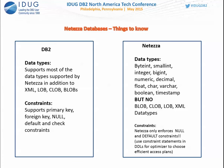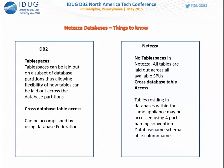In DB2 DPF, table spaces can be laid across a subset of database partitions, giving you flexibility. You can have single-partition tables or tables across subsets or all partitions. In Netezza, you don't have that option — all tables are always distributed across all available SPUs. For cross-database access, DB2 uses federation; in Netezza, as long as databases are on the same appliance, you can use a four-part naming convention: database name, schema name, table name, and column name.